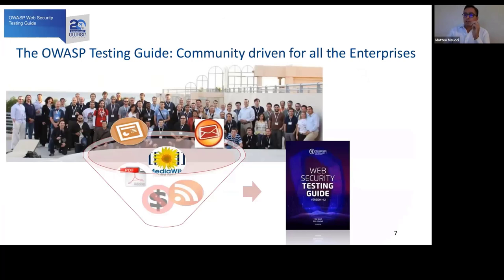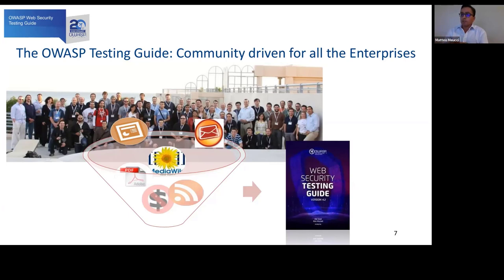The OWASP Testing Guide is a community-driven guide for all enterprises. What makes it really different is that it's not the idea of a couple of authors, but a contribution of hundreds of authors and reviewers who together built a methodology able to run anywhere in the world. The guide is primarily for testers, though developers should also understand vulnerabilities to build more secure software.